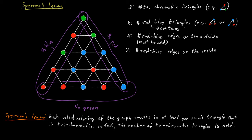Now, clearly, each of the k red-blue triangles contains two red-blue edges. And each of the l trichromatic triangles contains one red-blue edge. And all the other triangles don't contain any red-blue edge.